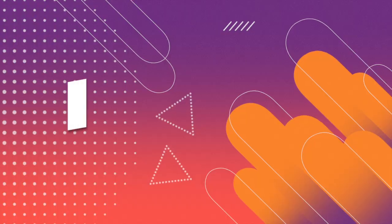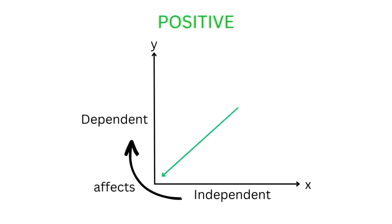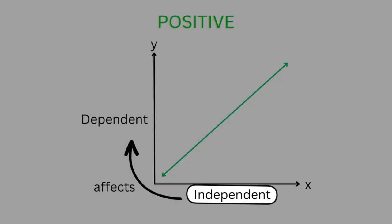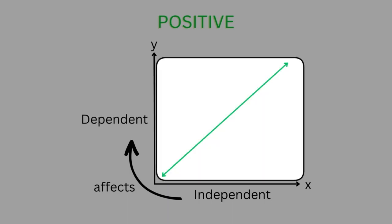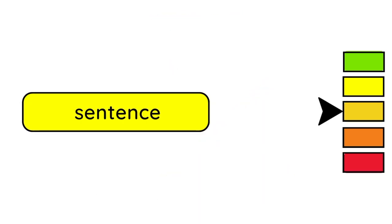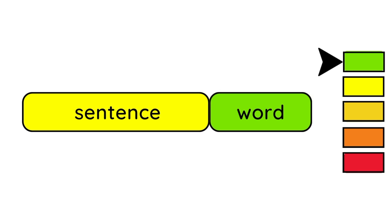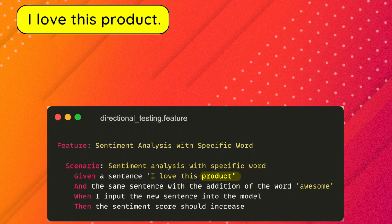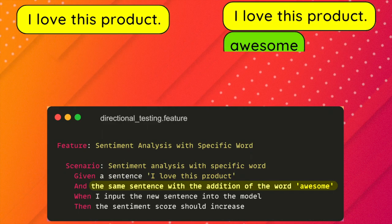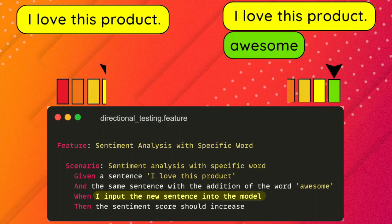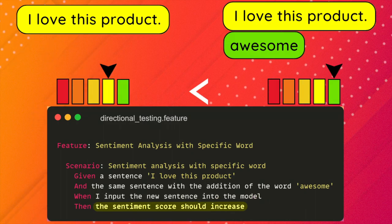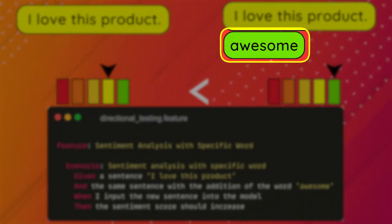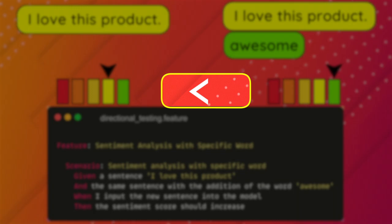Directional testing is a testing method that assesses whether the impact of an independent variable on a dependent variable is in a particular direction — either positive or negative. An example of directional testing is to check whether the presence of a specific word has a positive or negative effect on the sentiment score of a given text. Given the sentence 'I love this product' and the same sentence with the addition of the word 'awesome', when we input the new sentence into the model, the sentiment score should increase. This means that the presence of the word 'awesome' should positively affect the sentiment score.